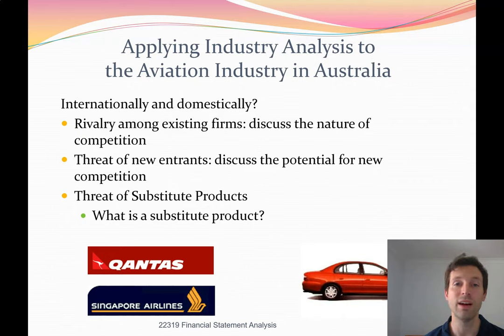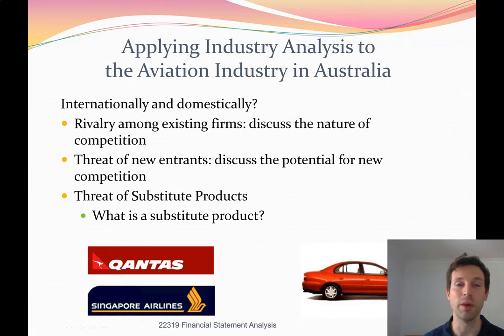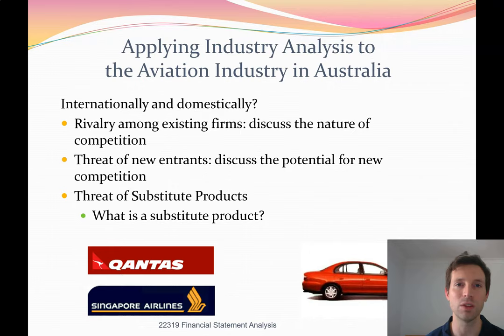The threat of substitute products differs significantly between the domestic and international aviation markets. A car is a substitute for domestic travel — if going to Melbourne, you could drive. However, if you wanted to fly to California, you couldn't drive there. For international flights, the only substitute would be a boat, which is too slow and still expensive — not many customers will easily switch to that substitute. They're much more likely to switch to a rival airline instead.